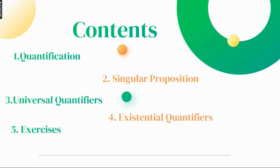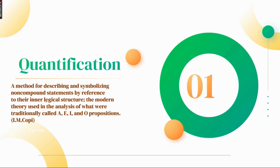universal quantifiers and existential quantifiers, and lastly I'll also be solving the exercise. So let's start with the definition which is given in IM copy. Quantification is a method for describing and symbolizing non-compound statements. This line is important — it is for the non-compound statement by reference of the inner logical structure, the modern theory used in the analysis of what we traditionally call AIEO propositions.